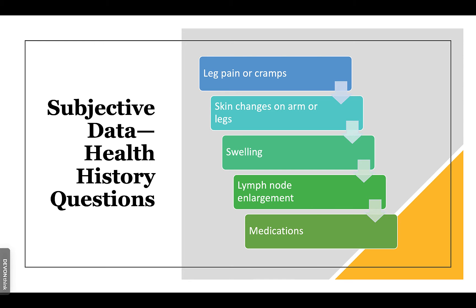Document this as intermittent claudication. We also want to look for skin changes on the arms or legs — the skin will get shiny as blood flow decreases. First we lose the hair follicle; if there's no hair in an area, you must be concerned there's no blood flow there. Once the hair follicles die, the area starts to become shiny. Note swelling — is it pitting or non-pitting edema? Enlarged lymph nodes are also a cancer risk and important to document. And note medications, as some make patients more prone to clot.